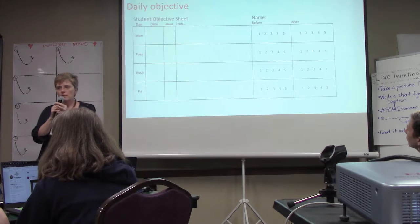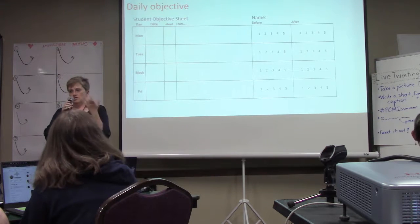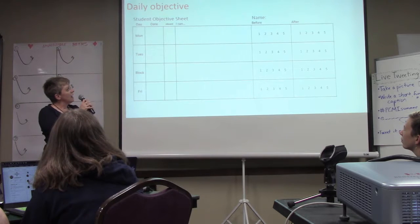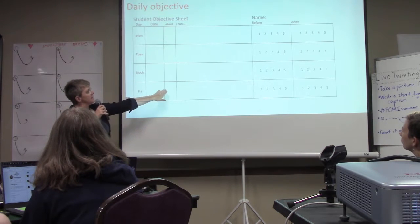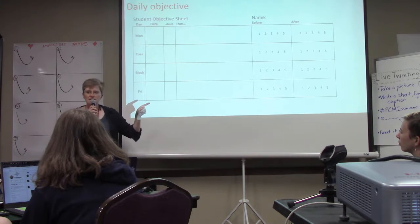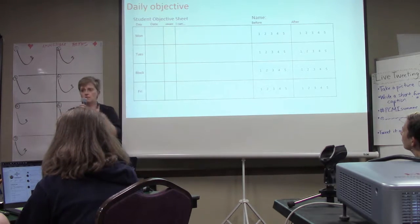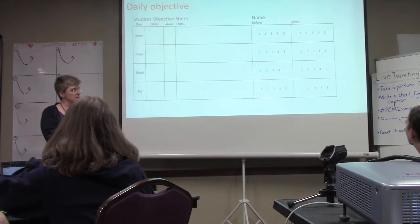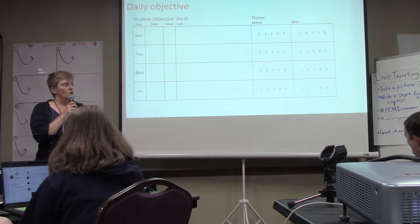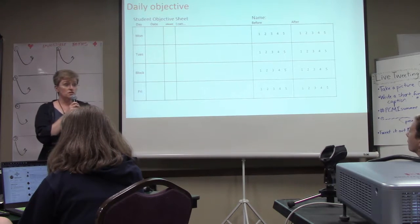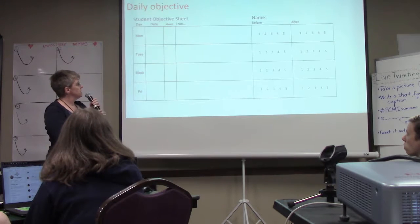This is something I pilfered from a lady named Jane Pollock — if you ever get a chance to hear her at a conference, I recommend it. She talked about using daily objectives, which I have to put on my board every day. I write them in the 'I can' format. This is a sheet I give to my students: they fill in the date, they can check if they were absent, then they write the 'I can' statement and circle a number. One means 'I know nothing about this objective'; five means 'I can teach it to somebody else.' They rate themselves before the lesson and then update the number as a closure after the lesson. We also use these when building reviews for tests.